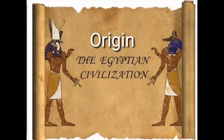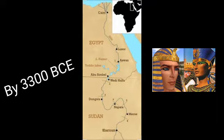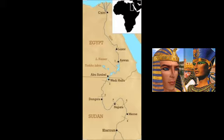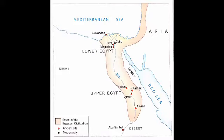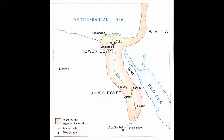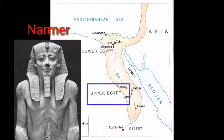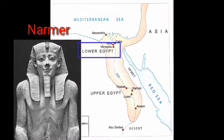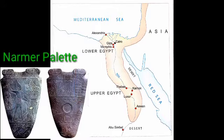Origin of the Egyptian civilization: By 3300 BCE, villages in the Nile valley had grown into towns. These towns were ruled by rich and powerful kings. In the early stages of the civilization, Egypt was divided into two kingdoms — Upper Egypt and Lower Egypt. In around 3100 BCE, a king of Upper Egypt named Narmar conquered Lower Egypt to unite the two kingdoms. The Narmer palette depicts the unification of the two kingdoms.